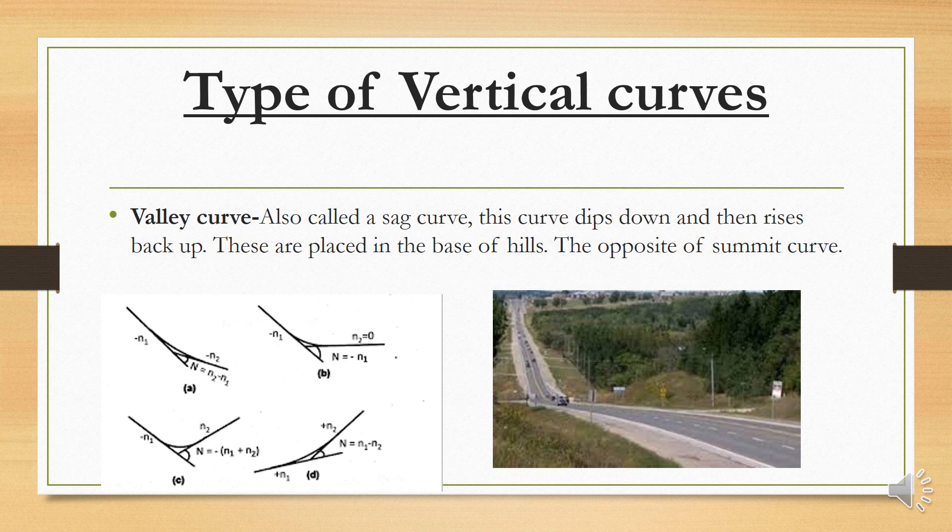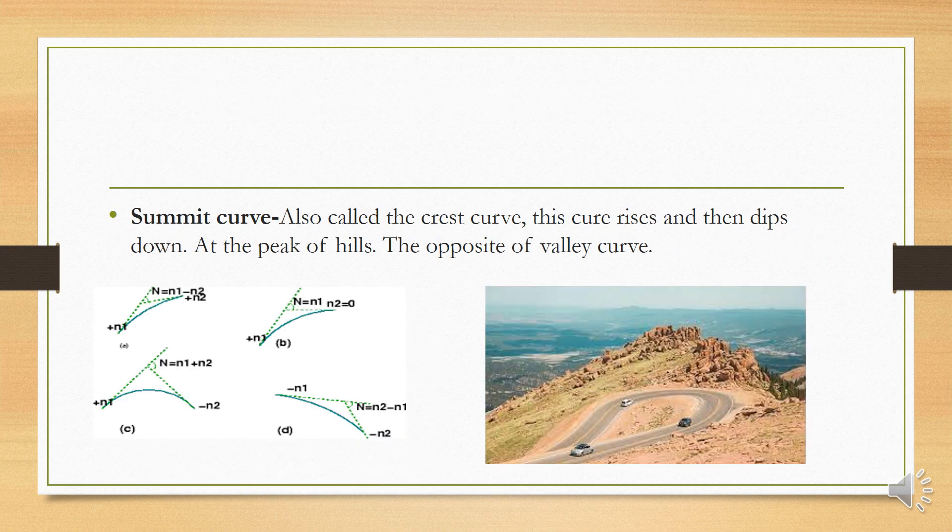In a valley curve, we start from a straight road, go downward into the valley section, and then come back up — that is the valley curve, found at the base of a hill. The summit curve, also called a crest curve, rises to a peak and then comes down — it is the opposite of the valley curve. The summit curve is found at the peak of a hill.